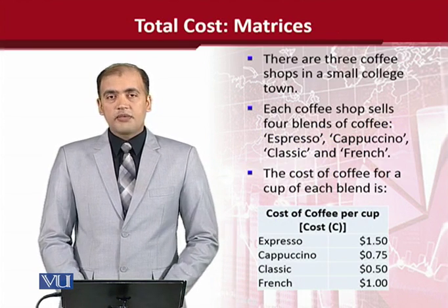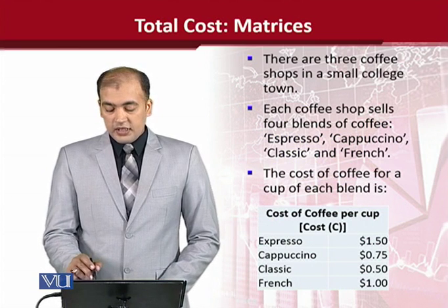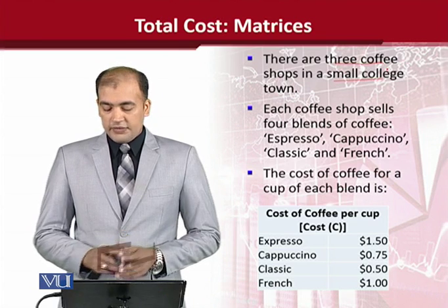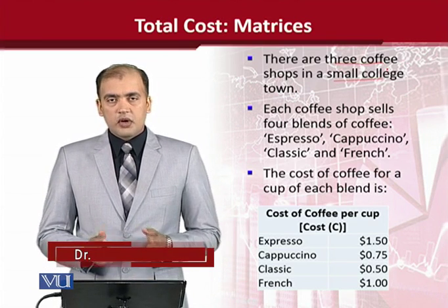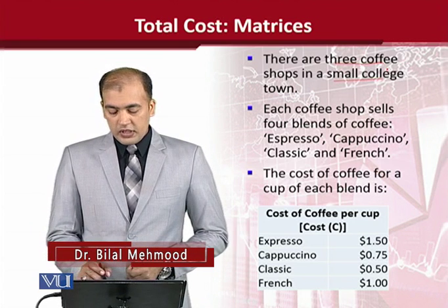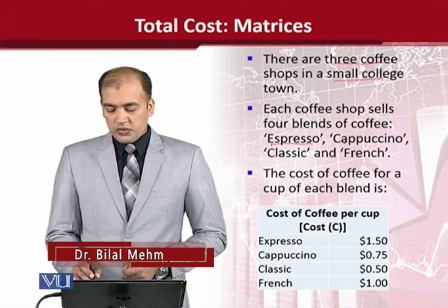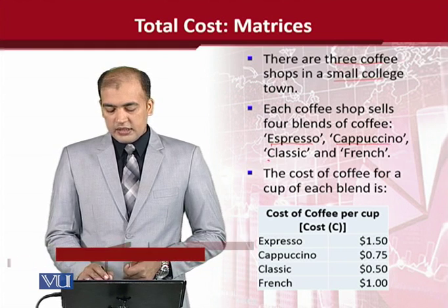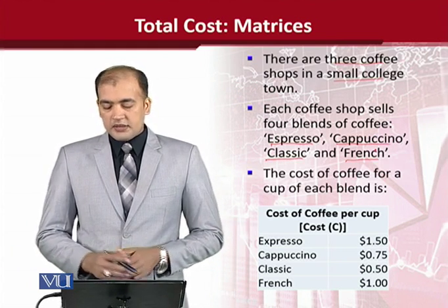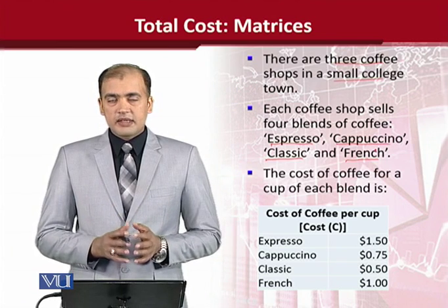Now here in this example, we are assuming that there are three coffee shops in a small college town. And once we have these coffee shops, definitely there are varieties of coffees. And there are four in number: one is espresso, other is cappuccino, the third one is classic, and the fourth one is French. So these are the four varieties that they have.